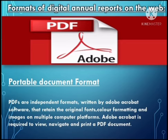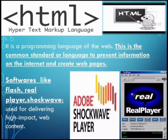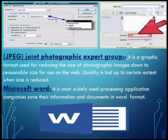The next format is HTML command, which is a programming language of the web. This is a common standard to present information on the internet and create web pages. Companies use HTML commands to build web pages that can display text and graphics. The next is software like Flash, RealPlayer, and Shockwave, which are used for delivering high-impact web content. These enable streaming of audio and video, multimedia and other rich applications. The next is JPEG, i.e. Joint Photographic Expert Group — a graphic format used for reducing the size of photographic images to a reasonable size for use on the web.